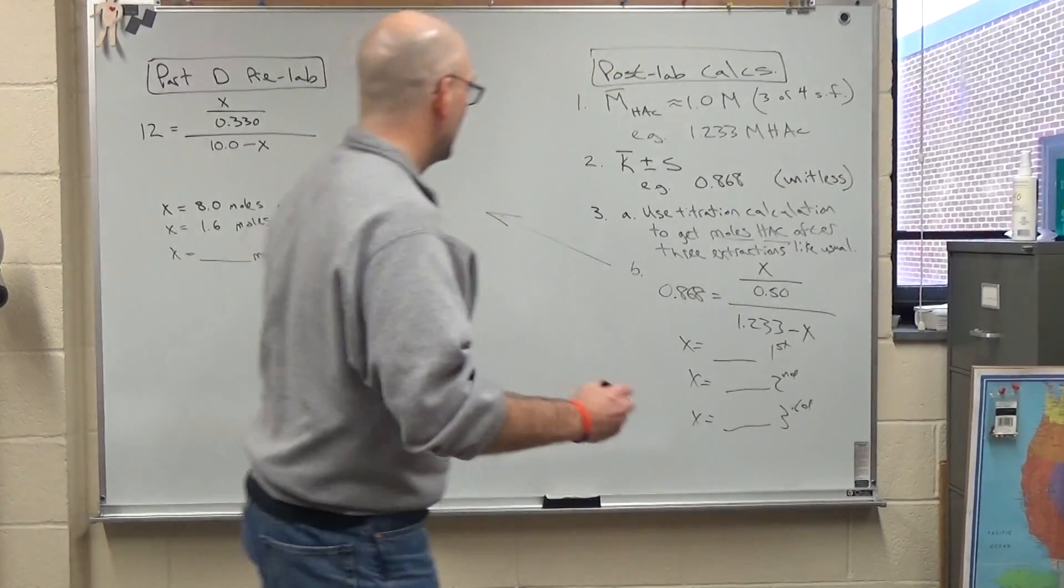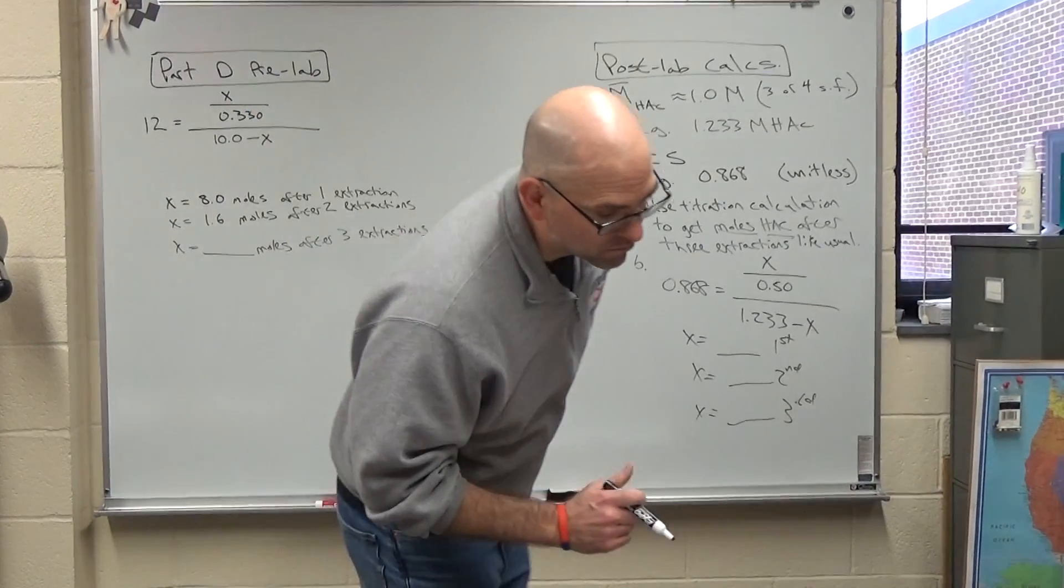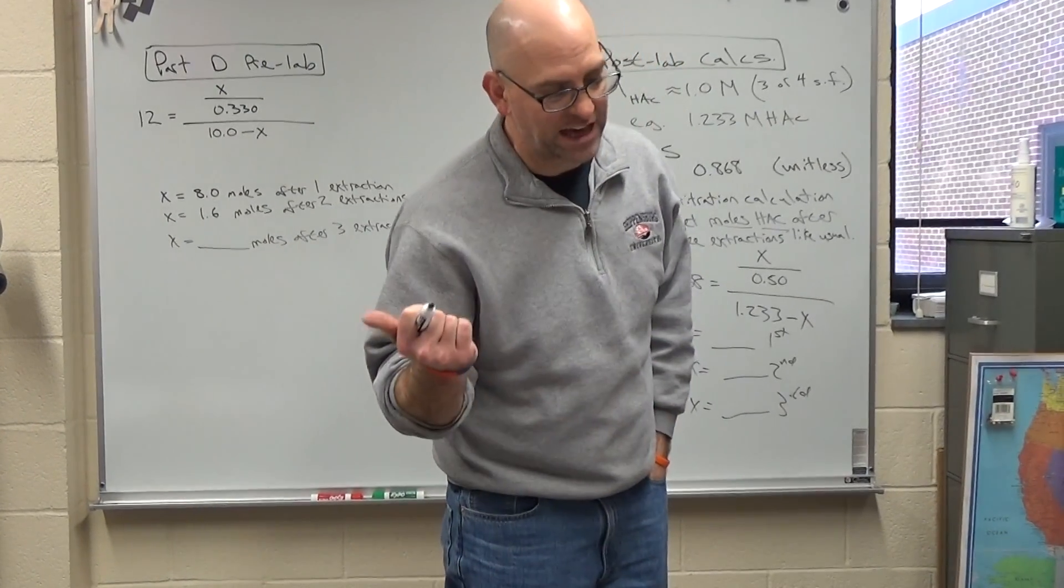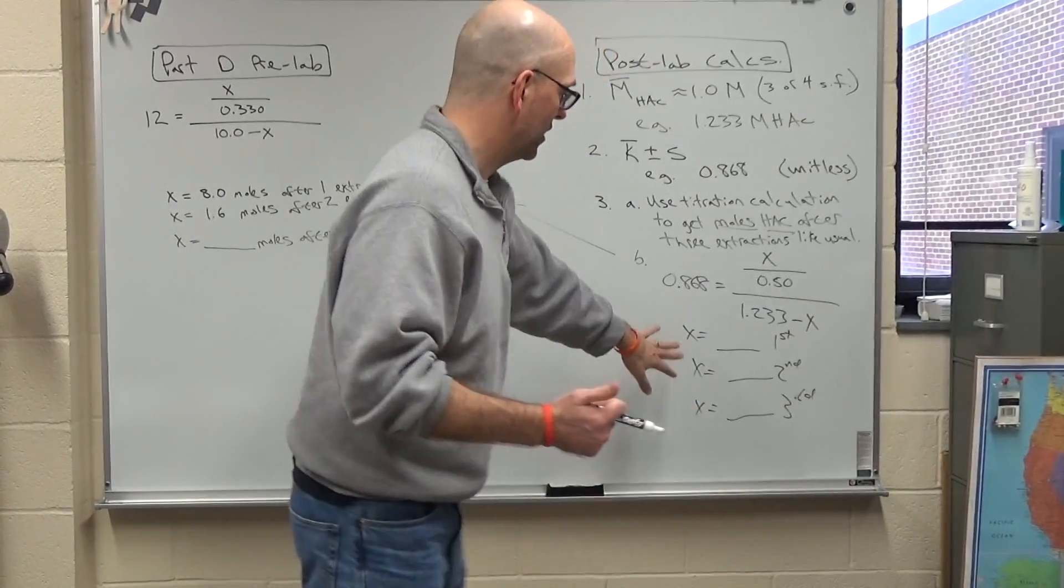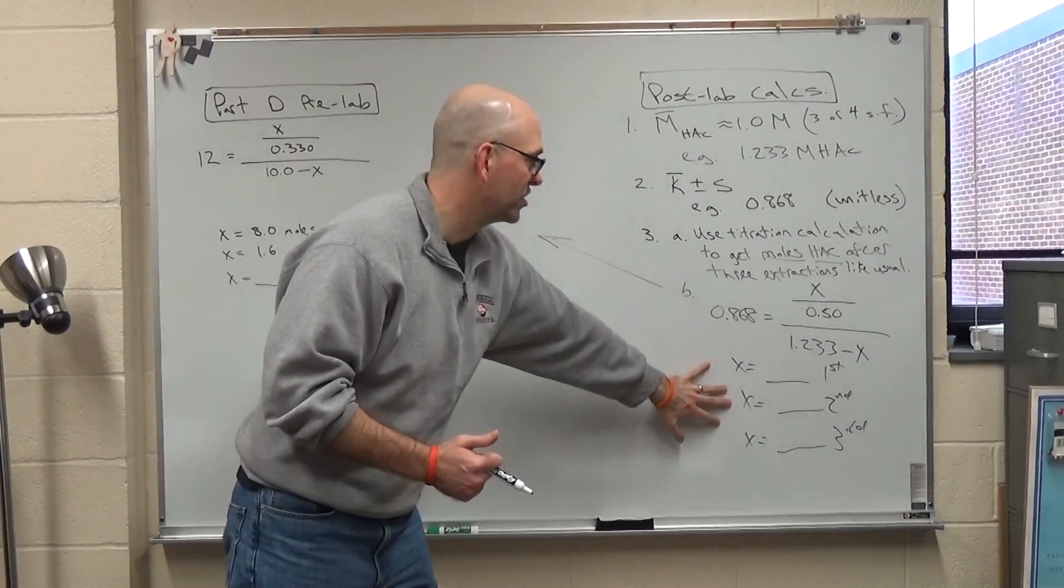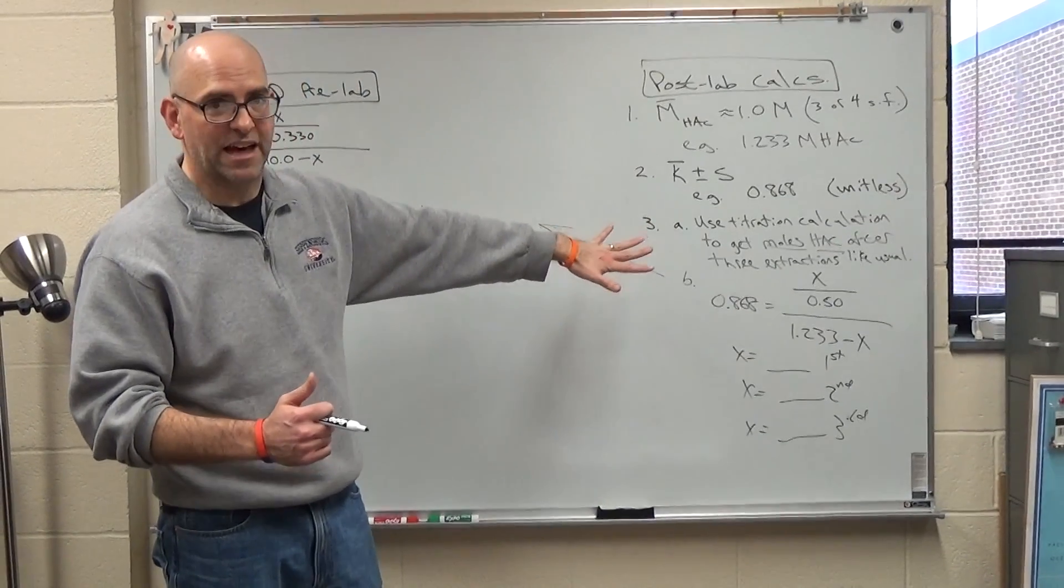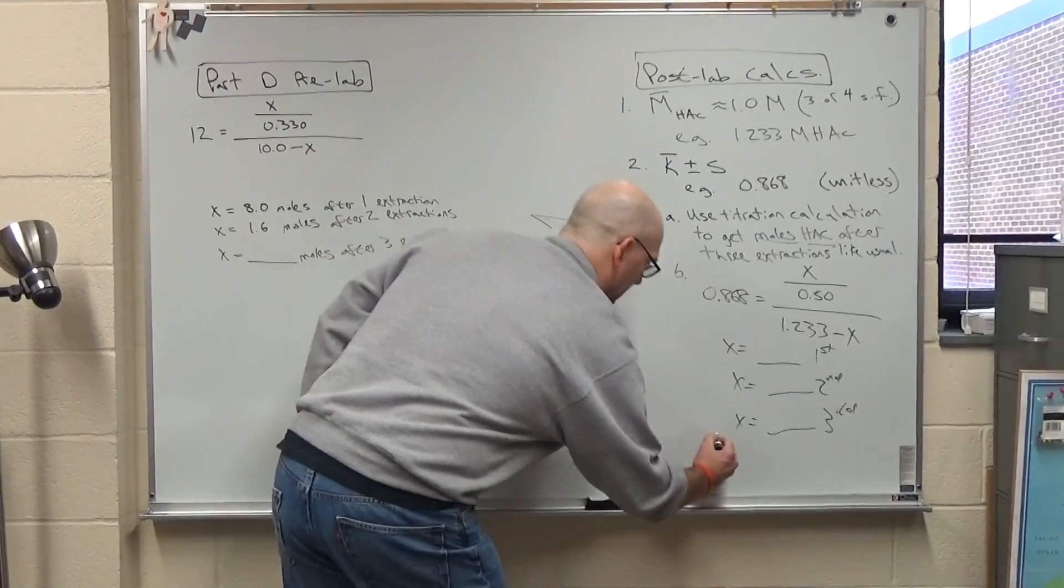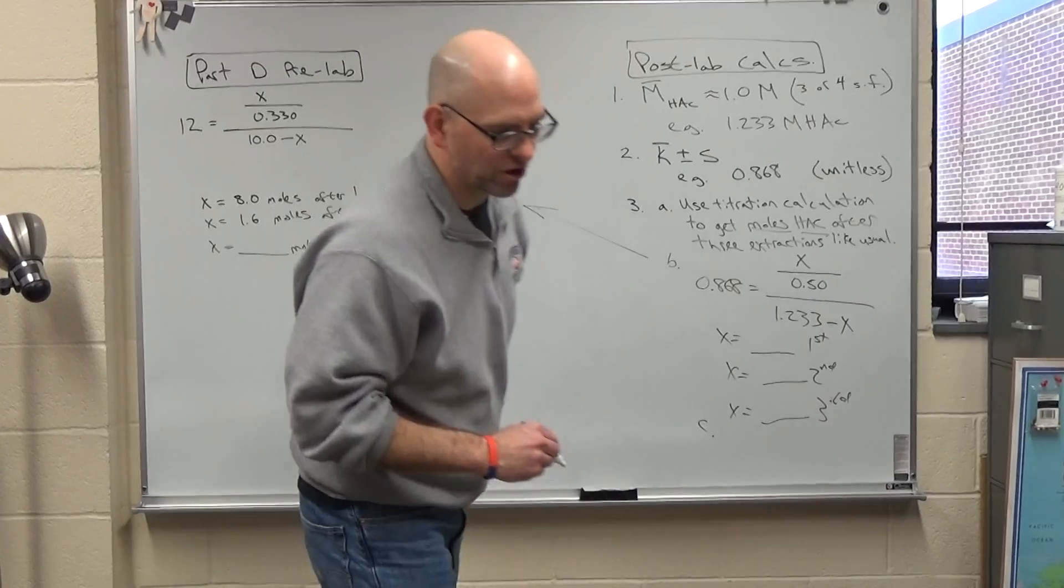Finally, the last one, the part C of this is just calculating a relative percent error between your calculation and then your experiment from before. I think you'll see that. That's not too bad. So part C, you can do that one on your own.